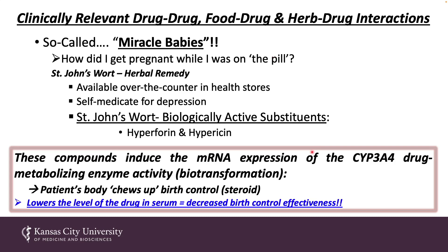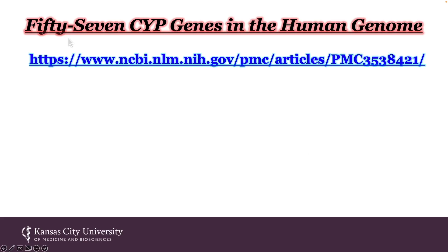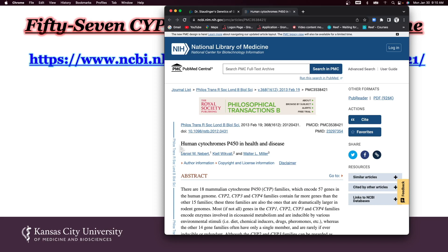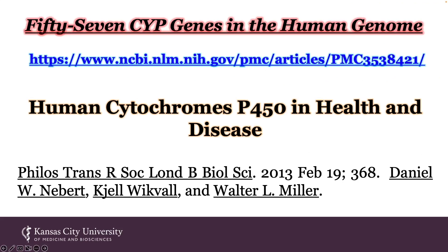The other mechanism of drug-drug interaction includes competitive inhibition of CYP3A enzymes. These concepts will be discussed more broadly in second-year pharmacology lectures. However, I wanted to introduce you to the notion here. It's important to understand there are 57 CYP genes in the human genome. If you click on this link, an article entitled Human Cytochromes P450 in Health and Disease will be revealed to you — great foundational material for second-year pharmacology lectures.